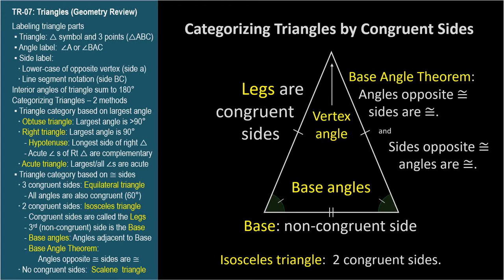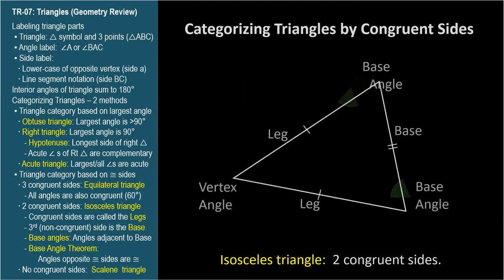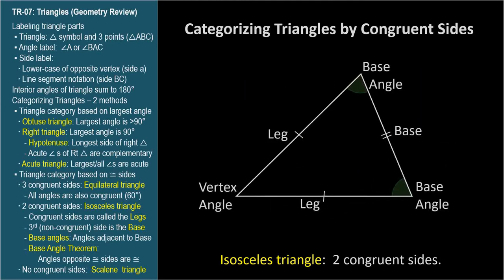Equivalently, if you're ever told or can show that two angles are congruent, then the sides opposite those angles will also be congruent. The angle opposite the base is called the vertex angle. Please note that base does not mean bottom — this isosceles triangle could be oriented differently, and the parts would still be labeled the same way. A triangle is either isosceles, equilateral, or scalene.